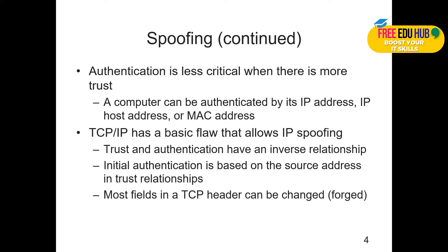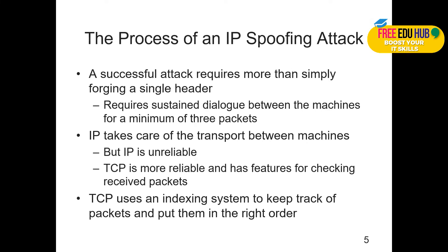Most fields in the TCP header can be changed or forged, because we collect information about packets flowing using Wireshark — the sequence number, sender and receiver IP addresses, and MAC addresses. You then craft your own packets using that same information. By capturing packets on Wireshark you can see how the sequence number is increasing, note the actual sequence number, and craft your own packet to spoof it. A successful attack requires more than simply forging a single header — it requires a sustained dialogue between machines for a minimum of three packets.